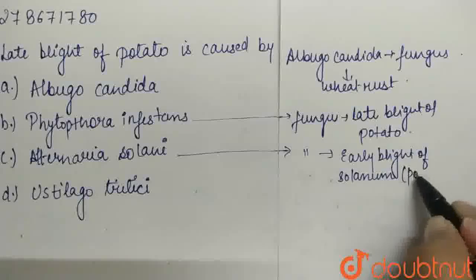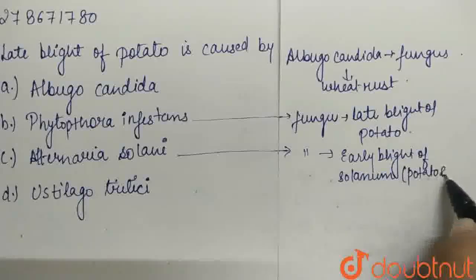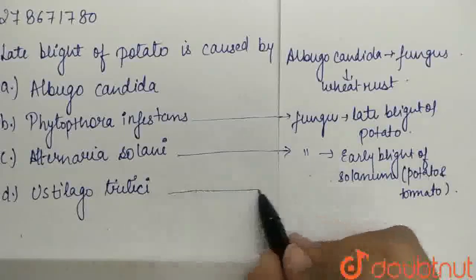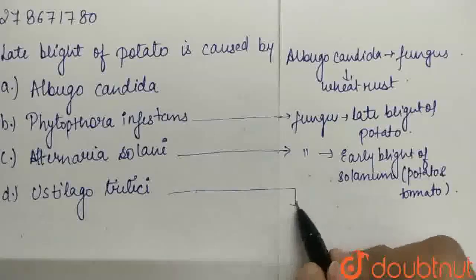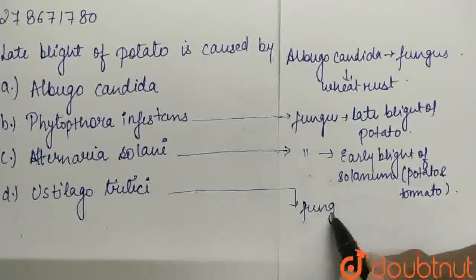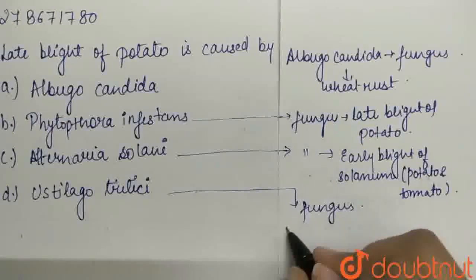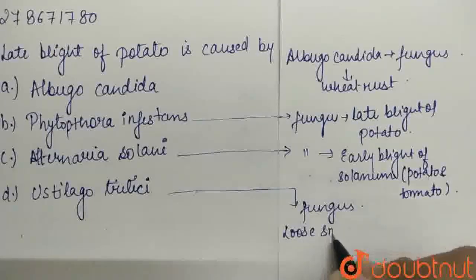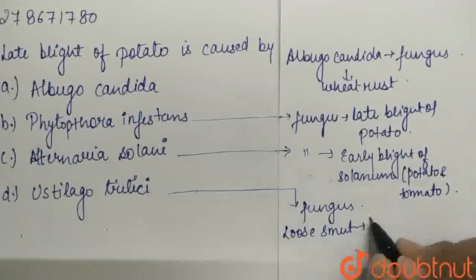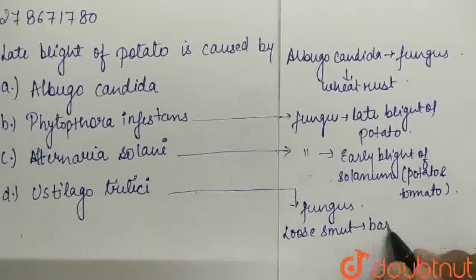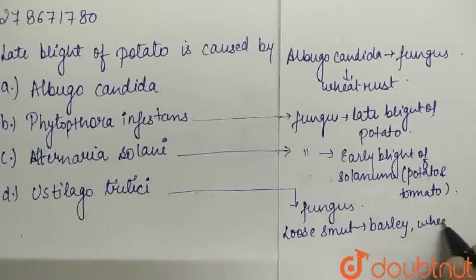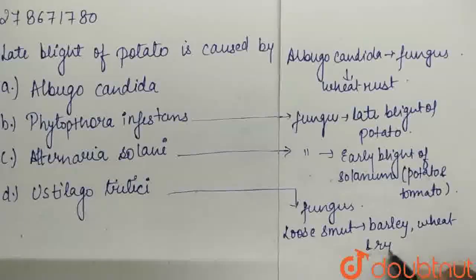like potato and tomato. Then Ustilago Tritici is a fungus that causes the most common disease seen in plants, that is loose smut, in wheat and rye.